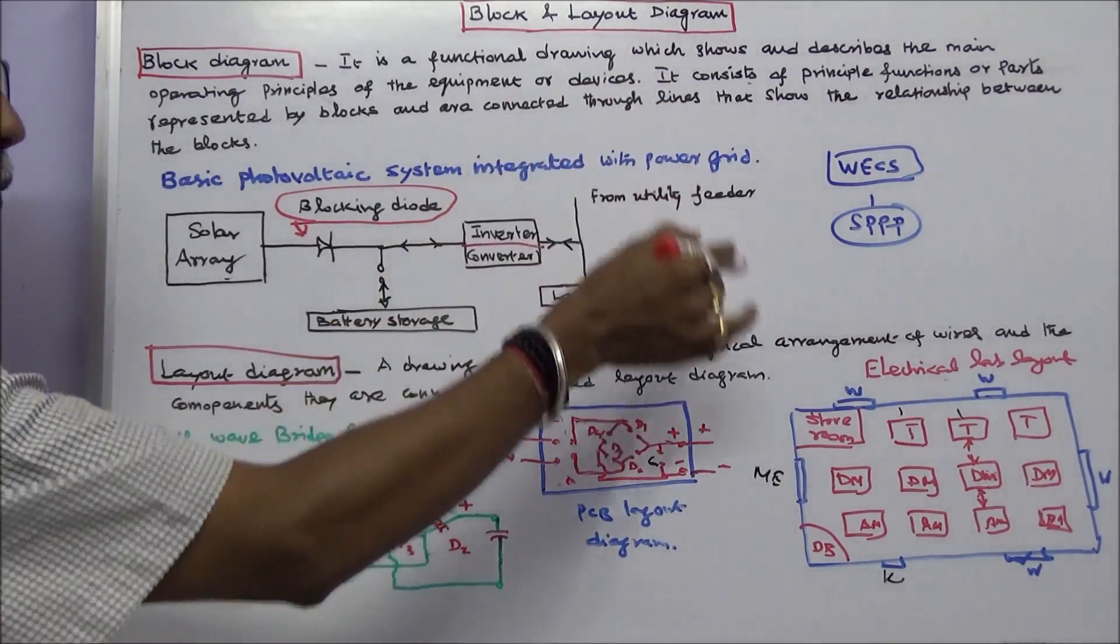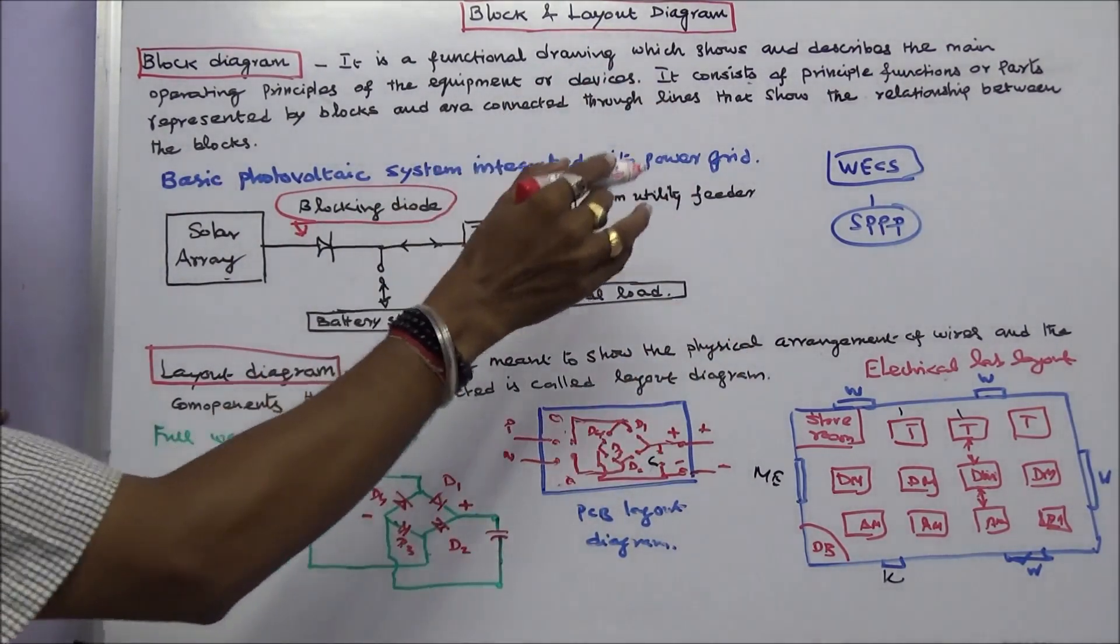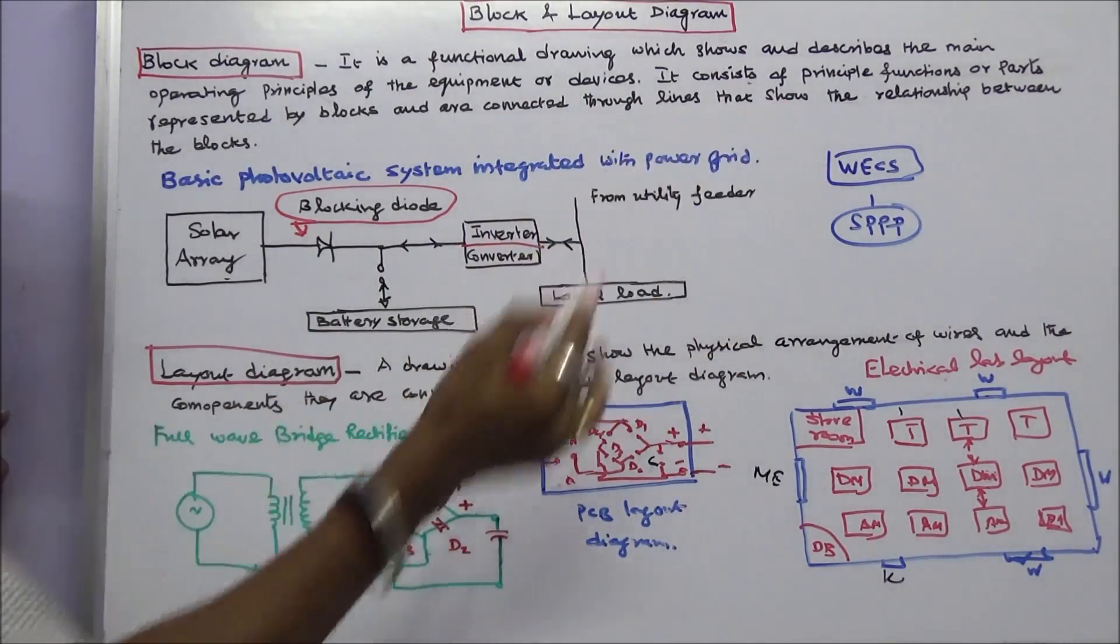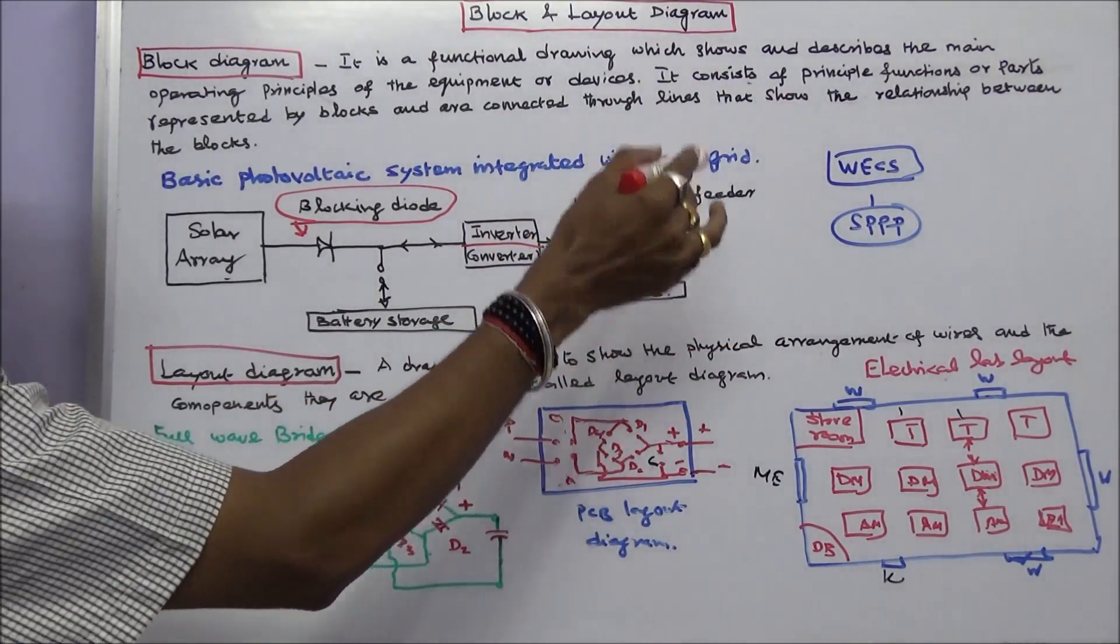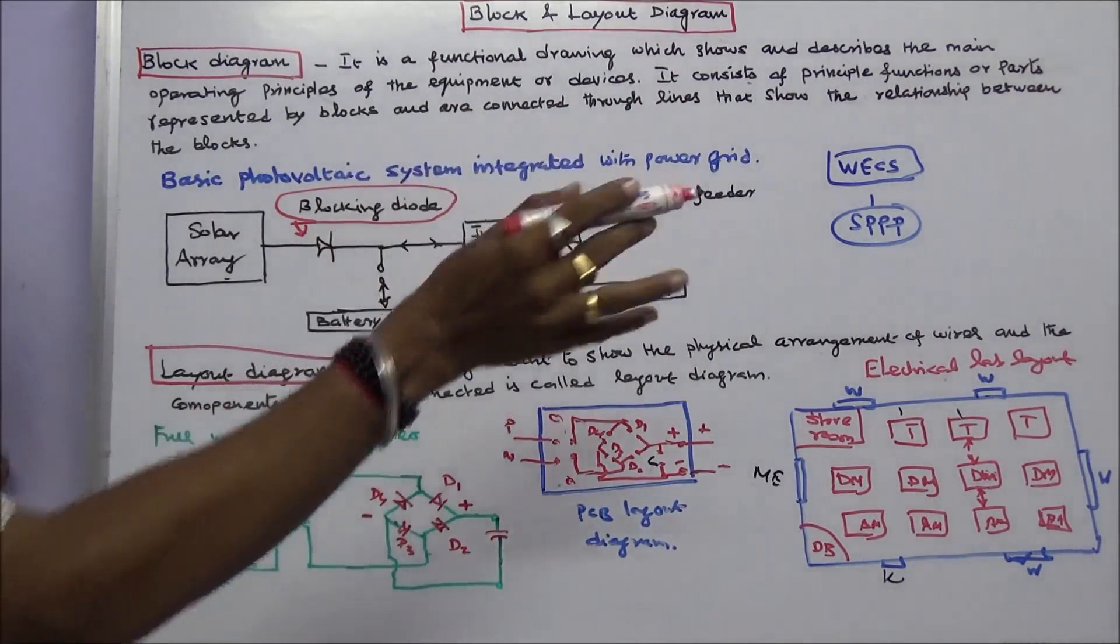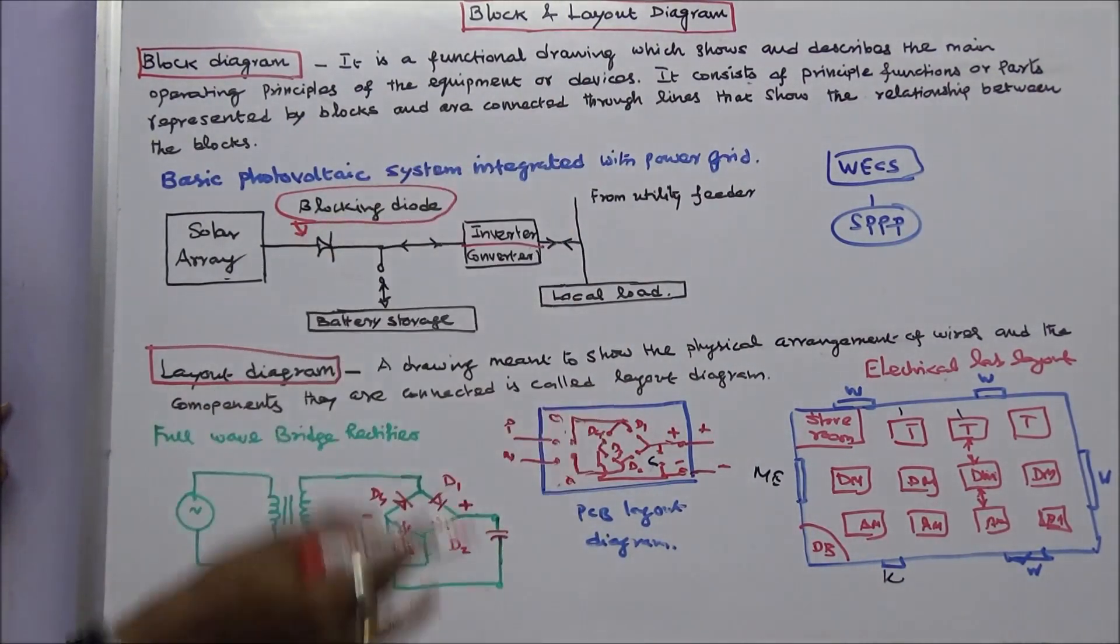There are a lot of block diagrams available in renewable source of energy by G.D. Roy: wind energy conversion system, solar pond power plant. Many block diagrams are available. Very easy to understand the principle and concept.